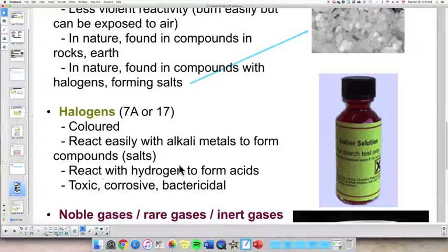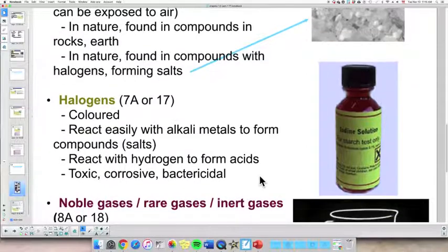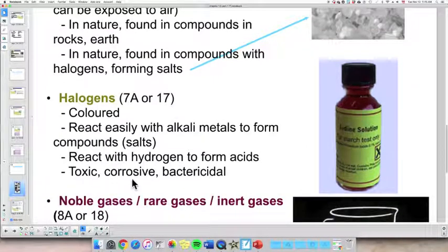They also react with hydrogen to form acids. One of the most common one would be hydrochloric acid. So hydrogen reacts with chlorine, which is a halogen, to create hydrochloric acid. Another one that's very important is that they are toxic, corrosive, and bactericidal. So they kill bacteria and microorganisms. Think of chlorine in water. We put that in pools in order to kill microorganisms that would make us sick. So halogens are toxic, corrosive, and bactericidal.